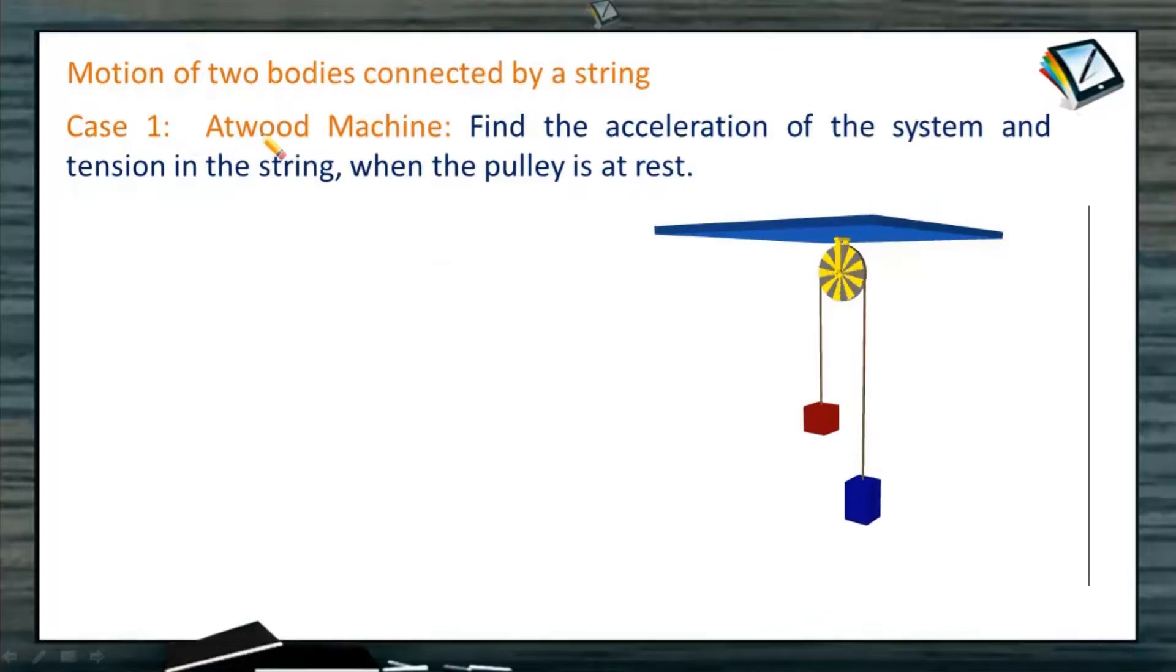Here we are studying motion of two bodies connected by a string. We call it the pulley system, Atwood machine. As we see in this figure, there is a very interesting figure here, with two bodies I have shown. A blue colored body, and another red colored body.